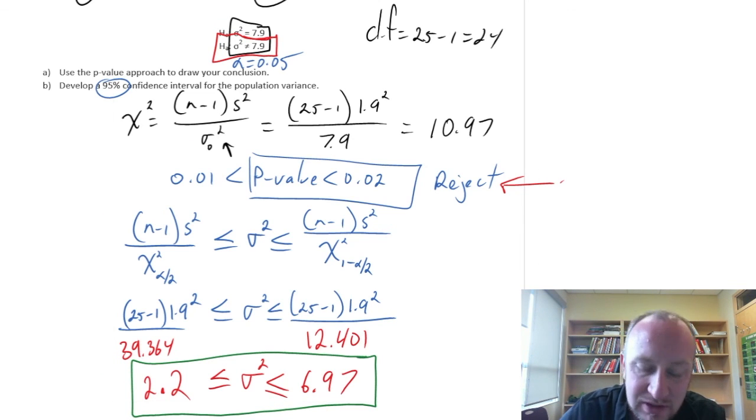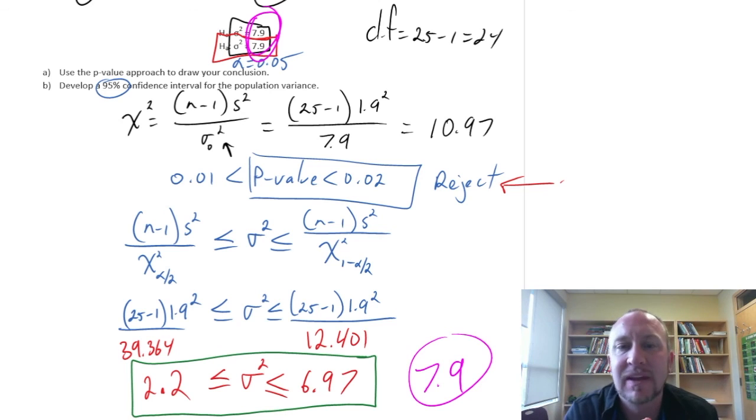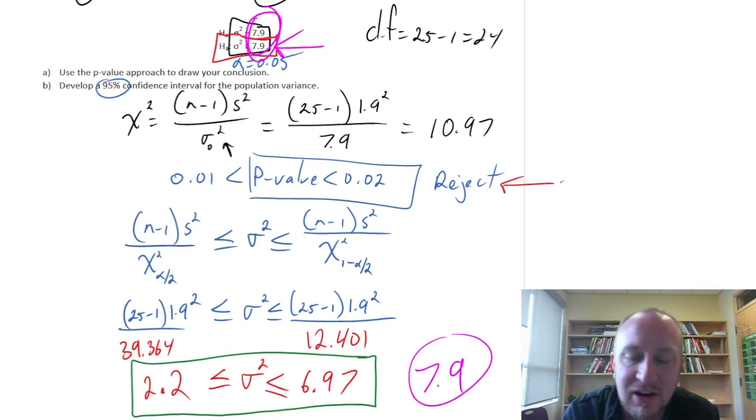And so when we produce that interval, we say, well, I'm 95% confident that it's between 2.2 and 6.97. Of course, 7.9, this hypothesized value, is somewhere out here, outside of that interval. And so that is then consistent. If I'm 95% confident it's between 2.2 and 6.97, then I am certainly 95% confident that it is not 7.9. Okay, that's it. That's all there is to this short little problem. Thank you for watching.